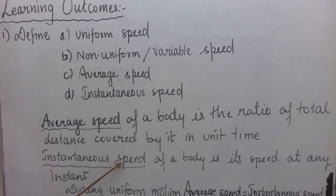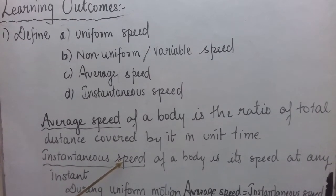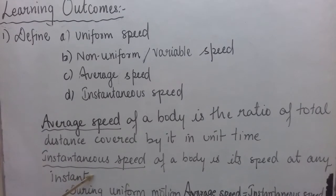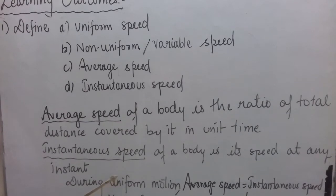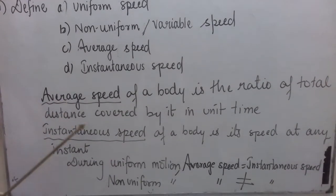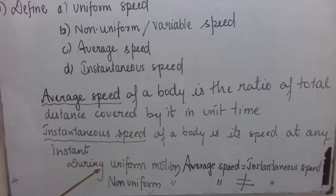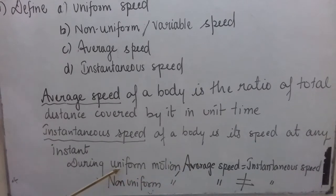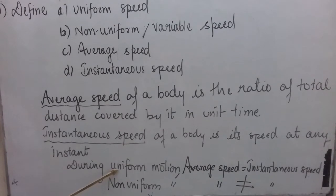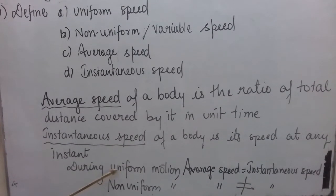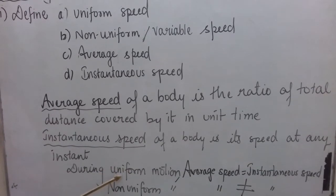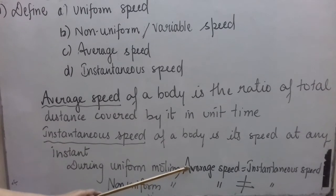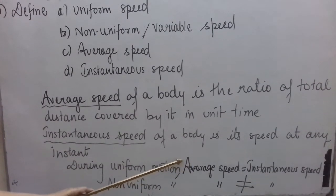Instantaneous speed is the speed measured by the speedometer of your vehicle. Instantaneous speed of a body is its speed at any instant during the motion. During uniform motion, the average speed value is equal to the instantaneous speed — for example, if your car's speedometer shows the same value, say 80 km/h, continuously, then during that part of the motion your speed is constant and average speed equals instantaneous speed.